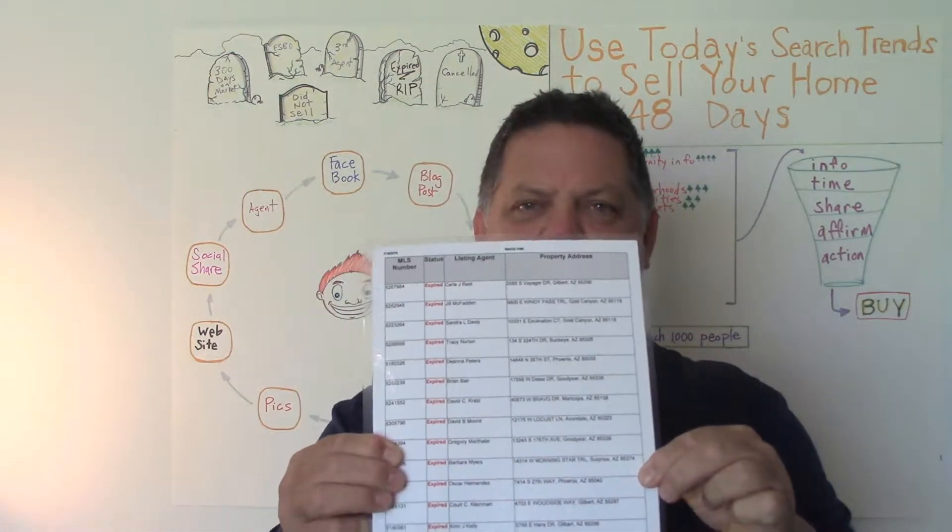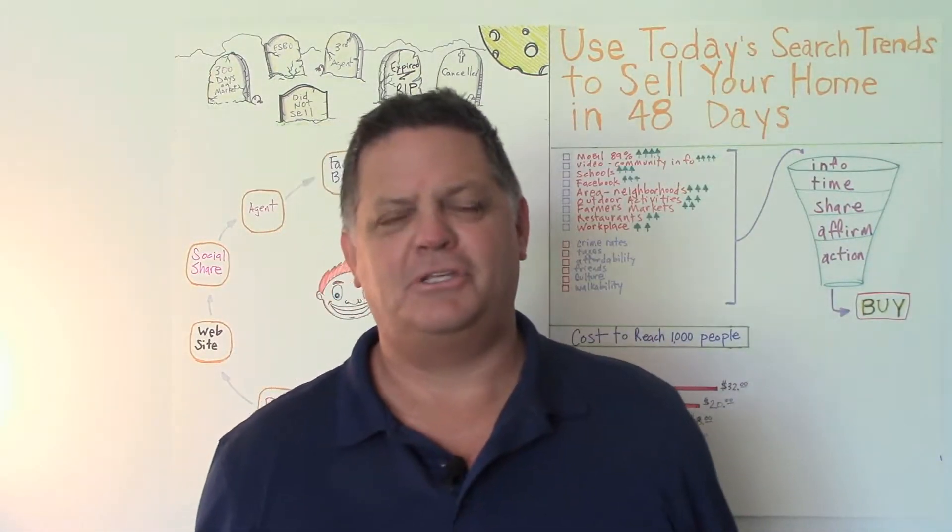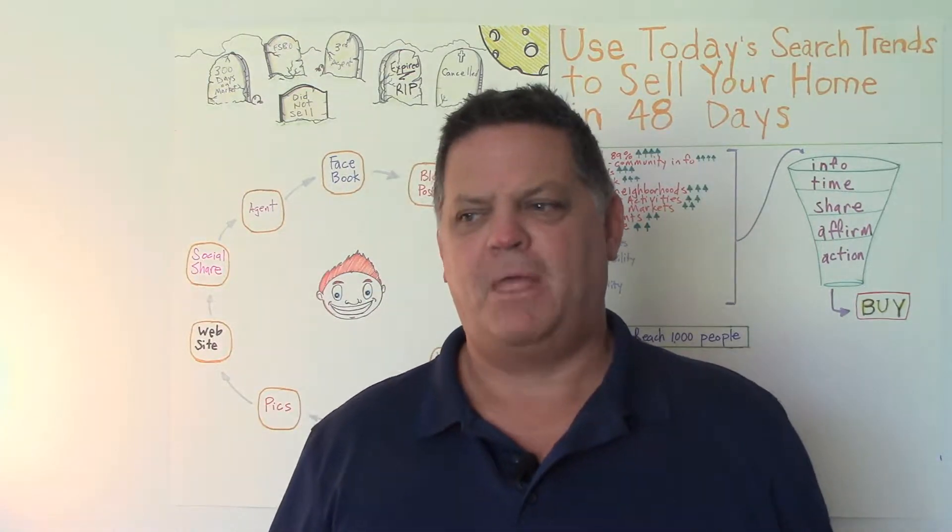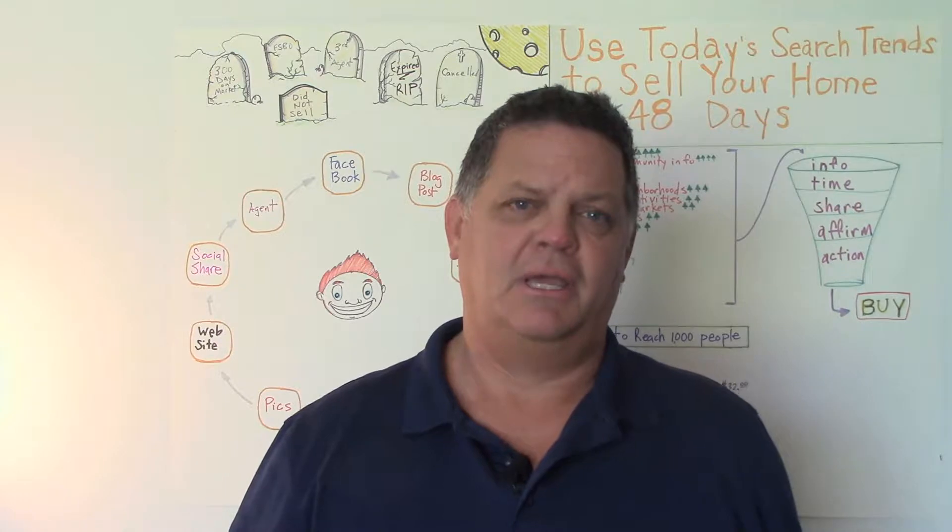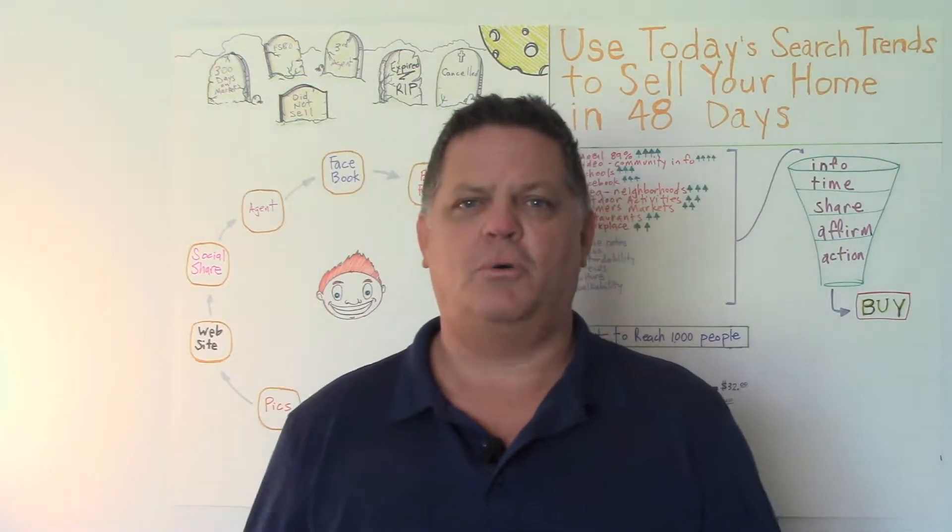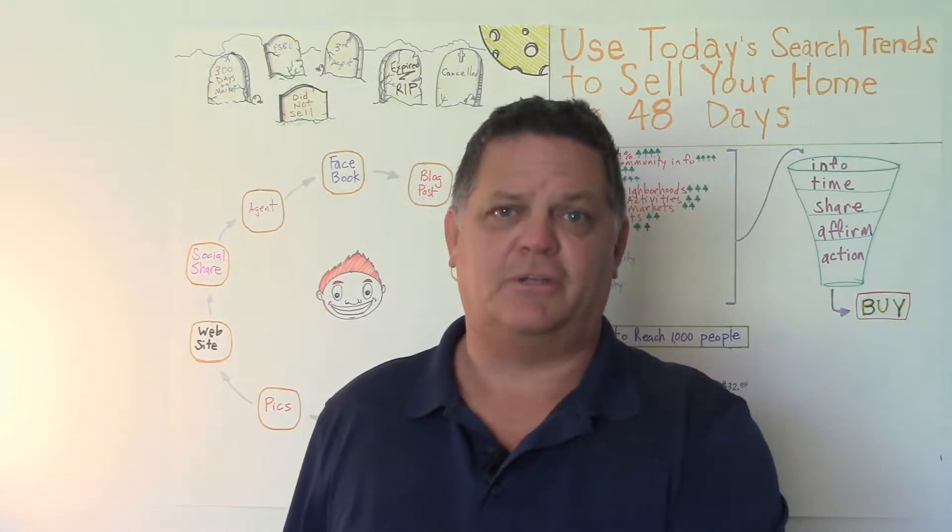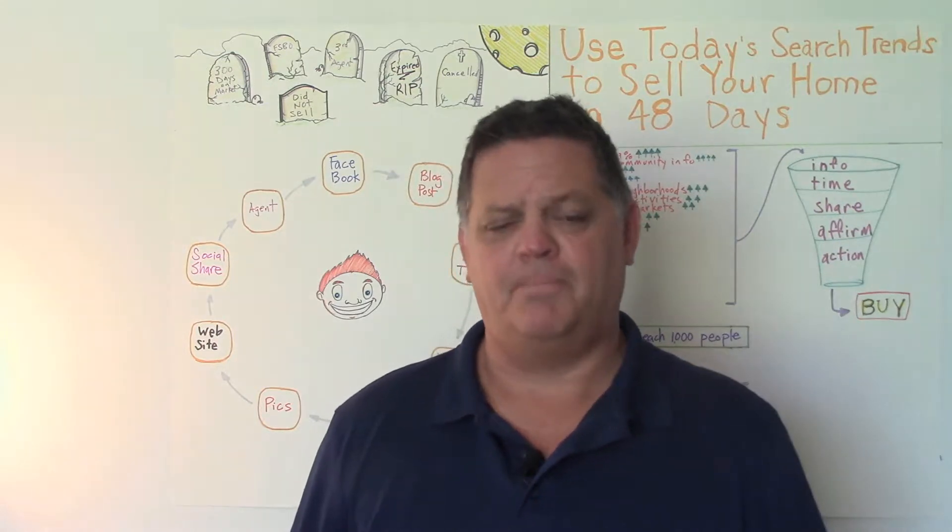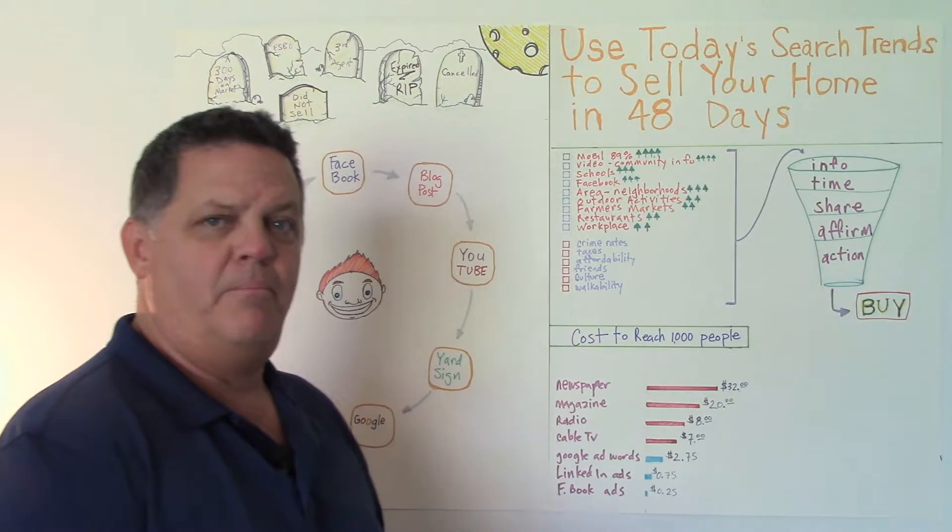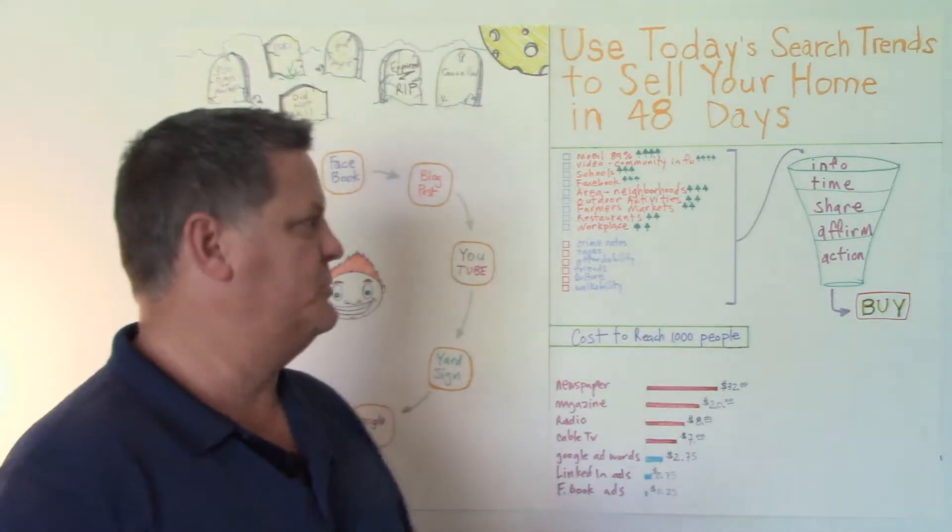See this? This is an expired list. This is a group of people who had elected to list their home with some real estate agent, and for one reason or another, the homes did not sell. Most people don't realize this, but about 30% of all homes listed in the Phoenix Metro market end up on a list like that. So today we're going to look at some of the advertising that may not be used by some of those agents in order to help their clients get their homes sold.